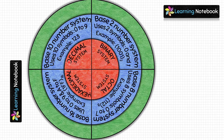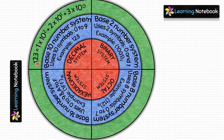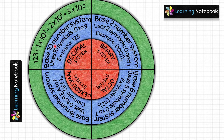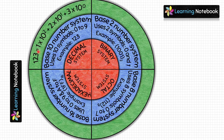First, in the decimal number system, we have taken the example of 123. Its expanded form is: 123 = 1 × 10² + 2 × 10¹ + 3 × 10⁰. We are multiplying by 10 because it is a base-10 number system. 3 is multiplied by 10⁰ because it is at the ones place; 2 by 10¹ because it is at the tens place; and 1 by 10² because it is at the hundreds place.